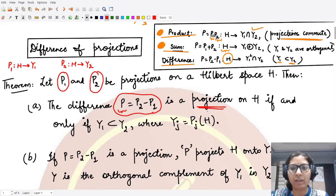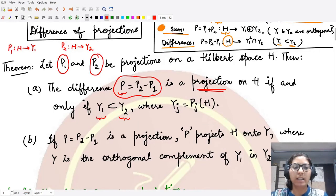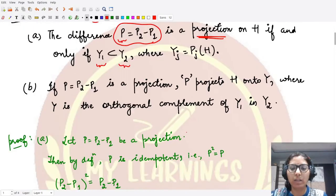We could call this thing the difference as a projection if and only if—it is a both-way condition—whenever the space Y1 is contained in the space Y2. And the second part tells us from onto where it is mapping the whole of the Hilbert space.